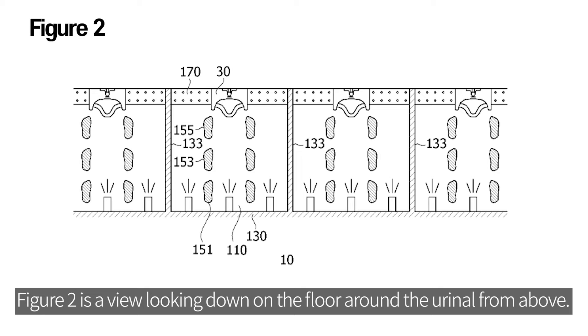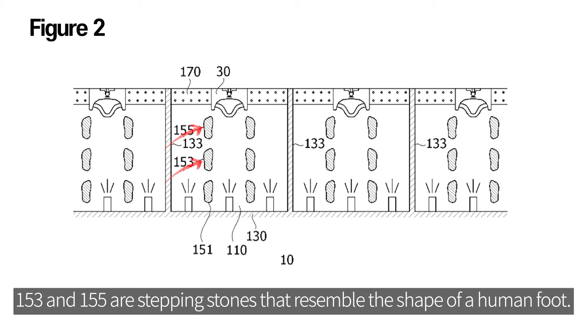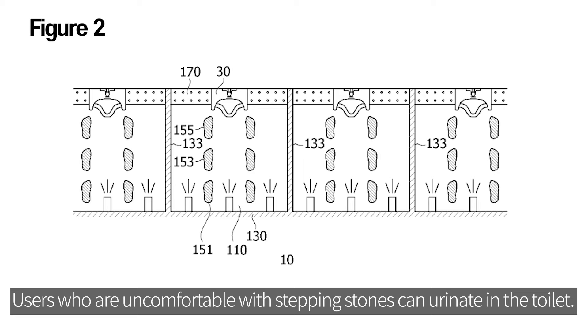Figure 2 is a view looking down on the floor around the urinal from above. 153 and 155 are stepping stones that resemble the shape of a human foot. Users that are uncomfortable with stepping stones can urinate in the toilet.